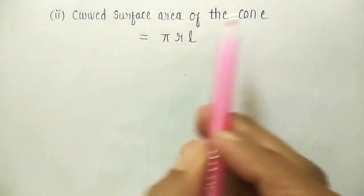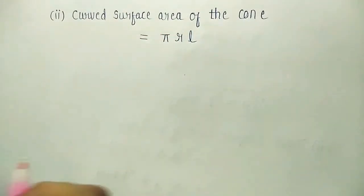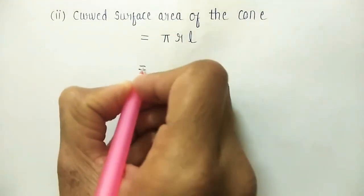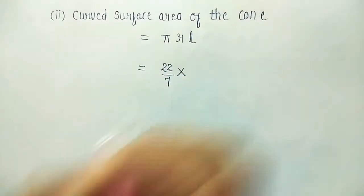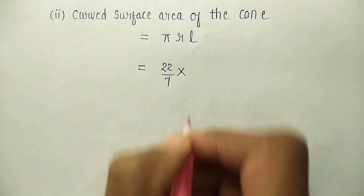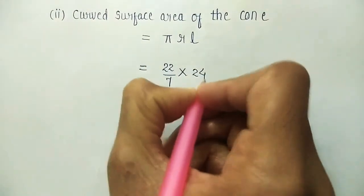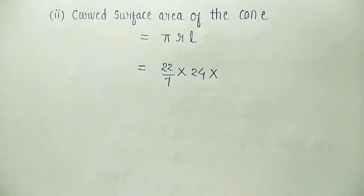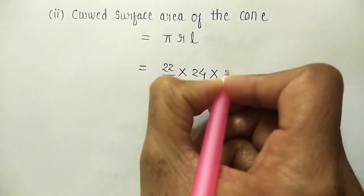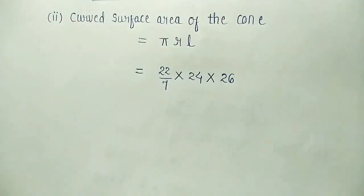Curved surface area of the cone is equal to pi R L. Let us put the values. Pi is equal to 22 divide by 7. R, radius is given as 24 and we have found L, the slant height, now as 26.